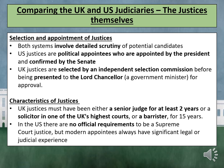An independent selection committee recommends one name to the Lord Chancellor, who asks the Prime Minister to recommend them to the Queen for a formal appointment. The Lord Chancellor can reject one name with good reason or ask the committee to reconsider once, but then must confirm the appointment. UK justices must have been either a senior judge for at least two years, or a solicitor in one of the UK's highest courts, or a barrister for 15 years.